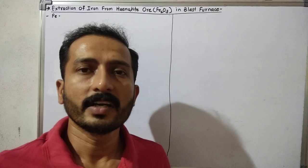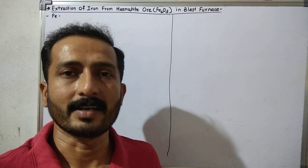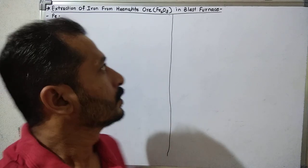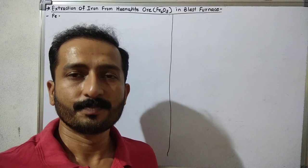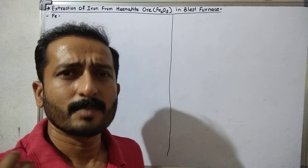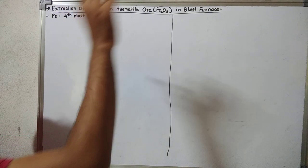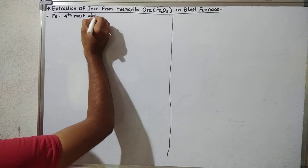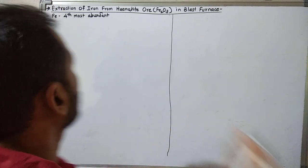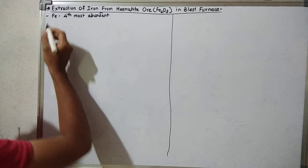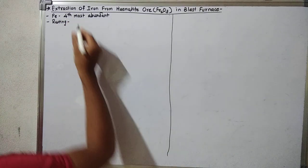Now remember, in the extraction of iron from hematite ore, why is this iron important? Iron is very important for industrial development. The development of any country is decided by how much iron is used in that country. Therefore, iron has much role in the development of any country. This iron is obtained from various ores, and this iron has the rusting property. Rusting means it undergoes corrosion when it comes in contact with moisture and air.